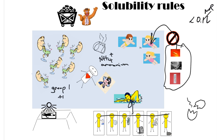Everything else consists of anions. The next figure is a man with a heart — he's having a heart attack. Heart patients always carry nitroglycerin, which reminds her of nitrates (NO3−). Nitrate is always soluble, so anything nitrate, no matter what it's attached to, is soluble.